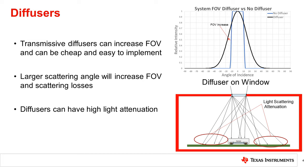To increase the field of view even more, we could use a diffuser with an increased half angle. However, the diffuser will scatter to angles lower on the system response curve, causing light attenuation. The wider the half angle of the diffuser and the more restrictive the aperture or sensor, the more light will be lost due to scattering. In the example plot, the 15 degree diffuser caused a scattering loss of 41% to get the improved field of view.